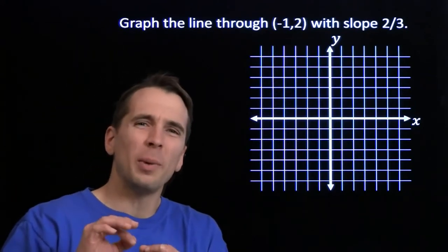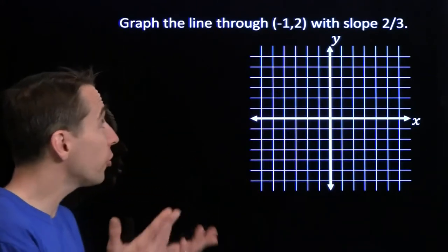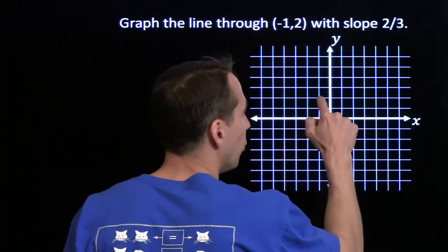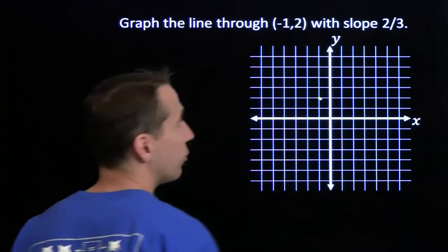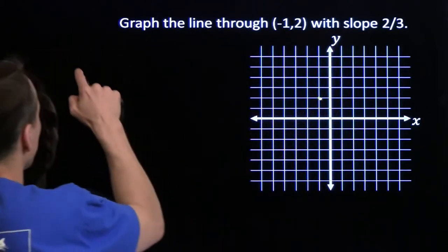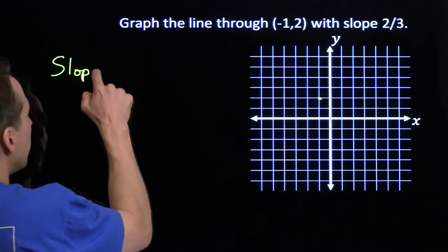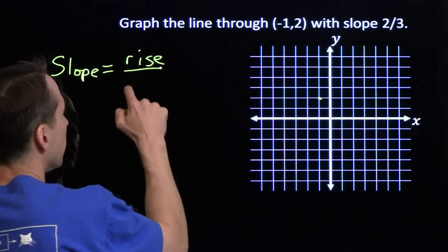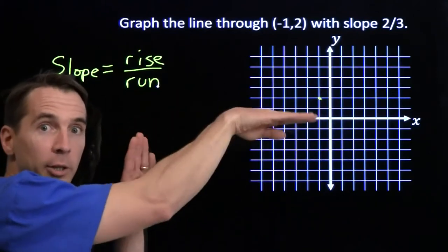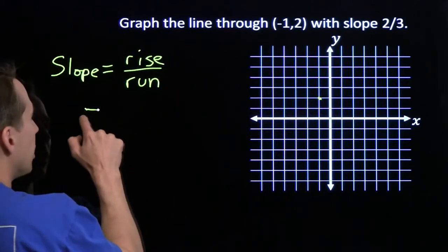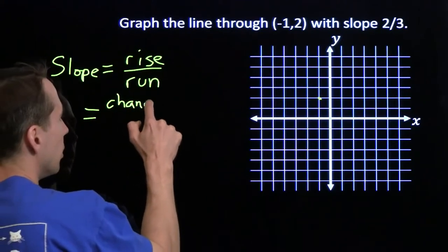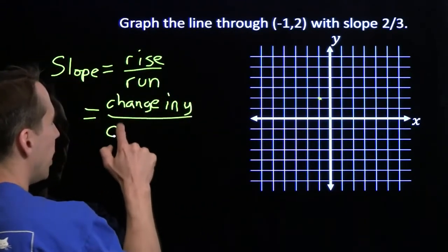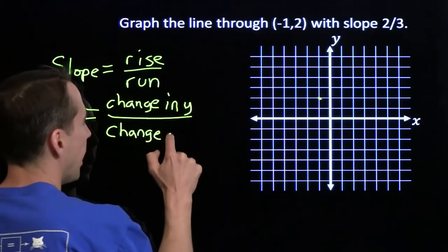Now that we know the definition of slope, we're going to talk about what slope means — what the slope of a line tells us about that line. We're going to start by graphing the line through the point (-1, 2) that has the slope 2/3. We can think of slope as rise over run: the amount you go up divided by the amount you go to the right. Another way to think about slope is the change in y divided by the change in x.